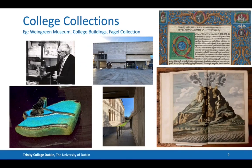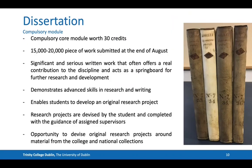All of these campus collections form a core part of our research methods seminar. The dissertation is your own piece of work, worth 30 credits, and is a 15,000 to 20,000 word piece submitted at the end of August. It's a significant and serious written work that often offers a real contribution to the discipline and can act as a springboard for your further research and development — whether within an academic realm, going on to a PhD, within the museum world, or as a researcher. It demonstrates your advanced skills in research and writing, and enables you to develop your own original research project, devised by you but completed with the guidance of an assigned supervisor from the department.